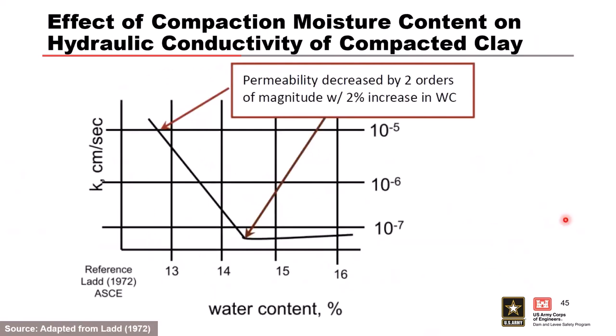Moisture content is really the big deal. A figure from EM 1901, developed from Lambe in 1972, shows that even a small increase in water content can dramatically decrease your permeability. That's why many compaction specifications allow the material to be compacted slightly wet of optimum rather than dry — typically a minus 1% to plus 2% of optimum, to get a well-compacted, fairly low permeability material without greatly increasing saturation and compromising strength.